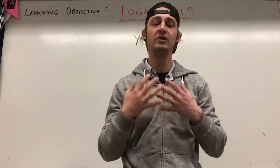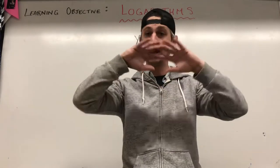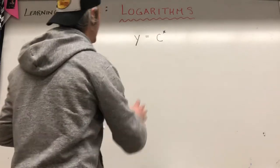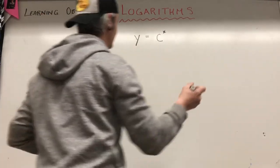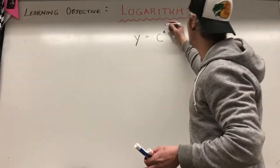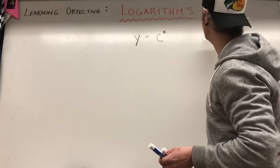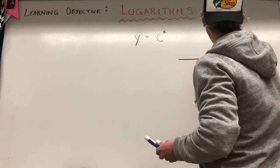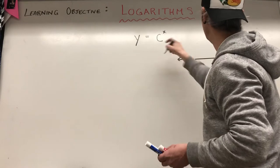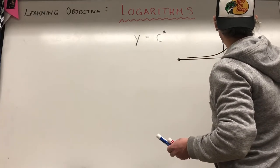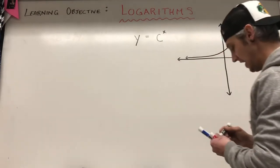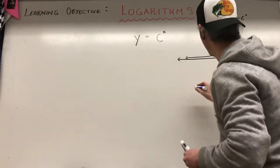In the last video we were introducing logarithms, and we're just trying to understand how we can manipulate the actual equations. So in the last video — kind of part one, this is like part two — we know that when we're dealing with exponential functions, our equation has x as our exponent, our variable. A general graph will look something like this — that's our exponential, y equals c to the x.